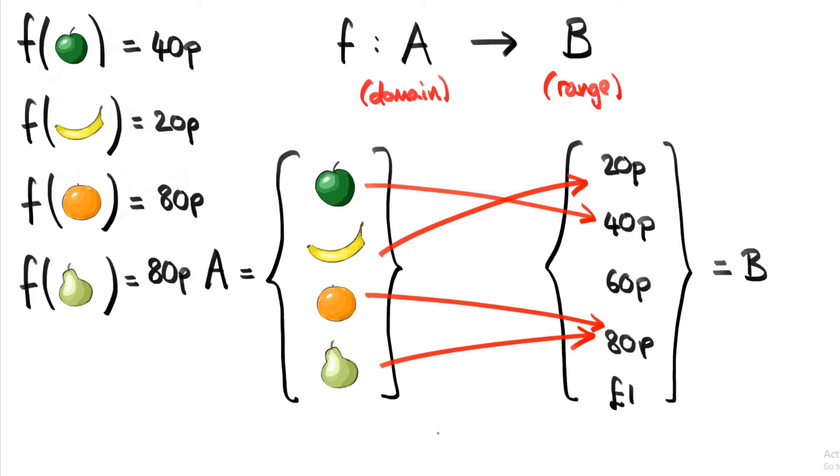But what we can't do is we can't have two arrows coming from one element in A. So, for example, if pear not only went to 80p but also went to one pound, then this would no longer be a function. That's because our function has to be unambiguous in the output it delivers.